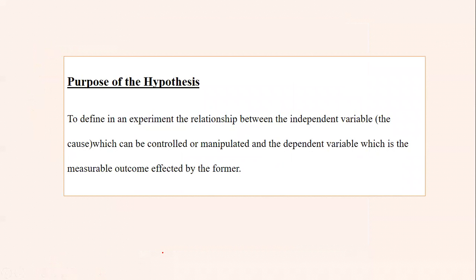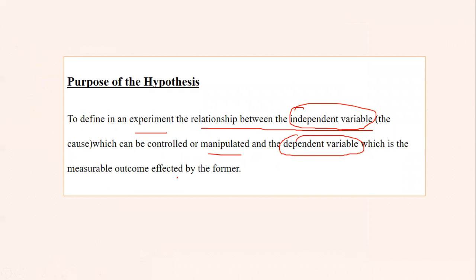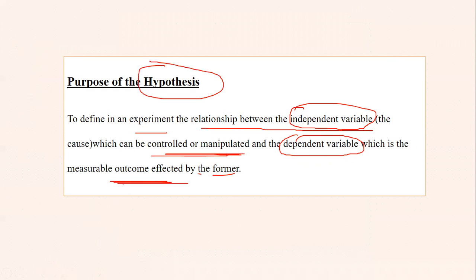Coming next is hypothesis. The purpose of hypothesis is basically to define, in an experiment, the relationship between the independent variable — which can be controlled or manipulated — and the dependent variable, which is a measurable outcome affected by the independent variable. So the relationship between independent and dependent variables is the purpose of hypothesis, and it is conducted to do an experiment.